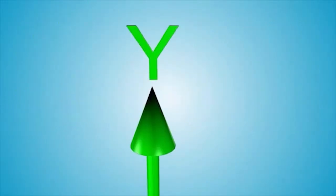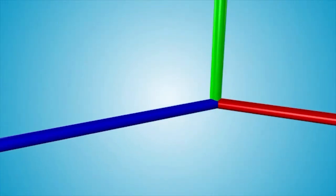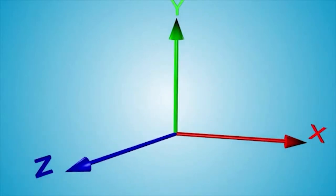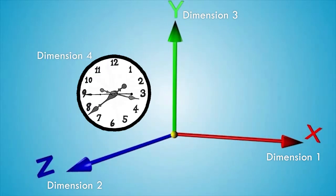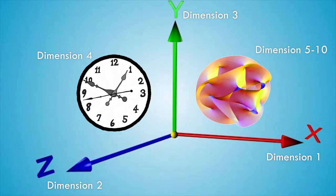Furthermore, superstring theory also decreased the number of higher dimensions required for these strings to vibrate in from 26 to only 10. According to Einstein's theory of relativity, space-time only consists of three spatial dimensions plus one dimension of time. But superstring theory, or more commonly known as string theory, predicts six additional dimensions to the four dimensions of space-time.